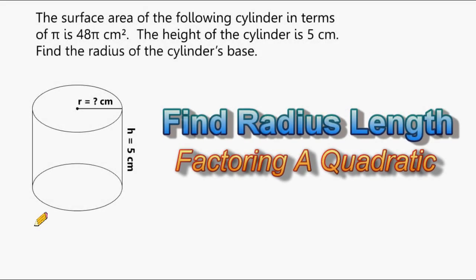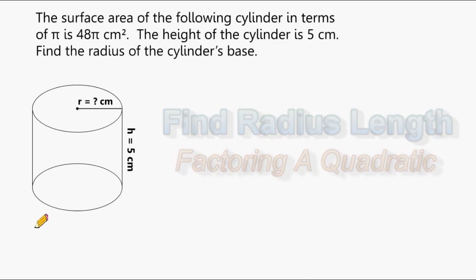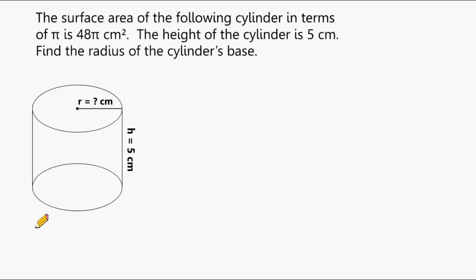This is Mr. Mason Ed, and what we're going to do in this tutorial is find the unknown radius of a cylinder when the surface area of the cylinder is given and the height of the cylinder is given. The first thing we're going to do is write out the formula to find the surface area of a cylinder.